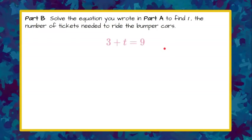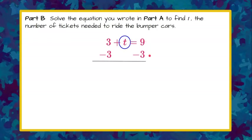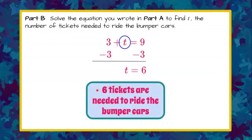Welcome back. We have our equation from Part A: three plus T equals nine. We want to solve for T, so we want to get T isolated all by itself. The inverse of adding three is to subtract three. What I do to one side of the equation, I must do the same to the other. So I subtract three from each side. Three minus three is zero, leaving just T on the left, and nine minus three is six. Therefore, T equals six — it took six tickets to ride the bumper cars.